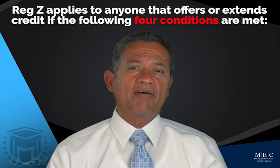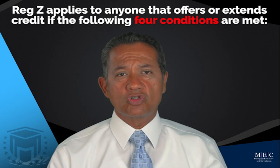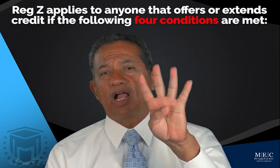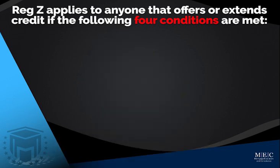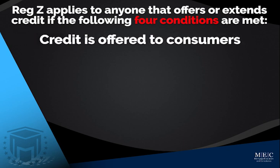Let's talk about TILA or Reg Z. Some people across America call it TILA — it depends on what part of the country you're on. Reg Z applies to anyone that offers or extends credit if the following four conditions are met. Number one: the credit is offered to consumers. A home loan would be to a consumer.